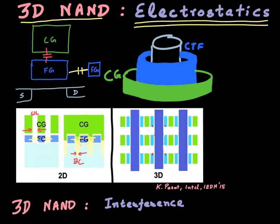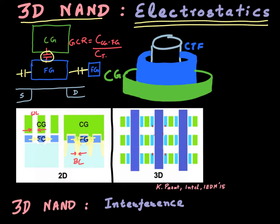Another figure of merit for electrostatics is the gate coupling ratio, which was defined earlier when we talked about 2D NAND. It essentially refers to the capacitive coupling between the control gate and the floating gate relative to the total capacitance of the floating gate. As you scale the 2D NAND device, the gate coupling ratio decreases because the relative fraction of the control gate capacitance versus the total capacitance decreases — the floating gate is now coupling much more to its neighboring cell versus the control gate.